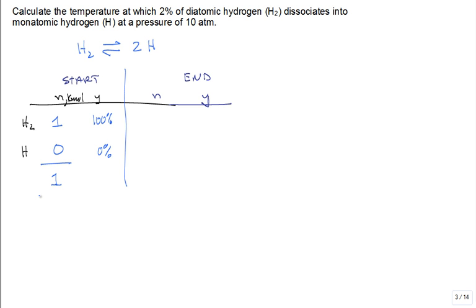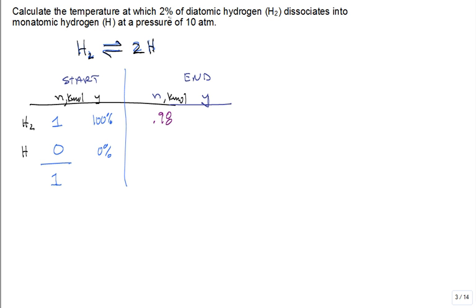We're going to boost the temperature such that you get 2% dissociation of diatomic hydrogen. If I started with one kilomole of H₂ and 2% has dissociated, I have 0.98 kilomoles of diatomic hydrogen left. So 0.02 kilomoles of H₂ dissociated.